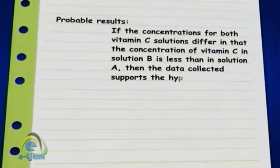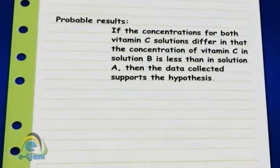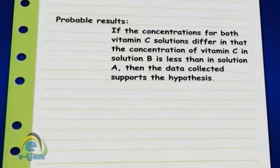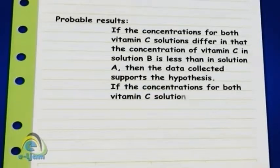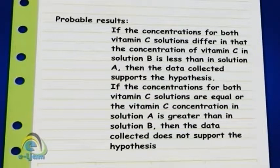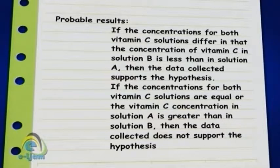If the concentrations for both vitamin C solutions differ in that the concentration of vitamin C in solution B is less than in solution A, then the data collected supports the hypothesis. If the concentrations for both vitamin C solutions are equal, or the vitamin C concentration in solution A is greater than in solution B, then the data collected does not support the hypothesis.